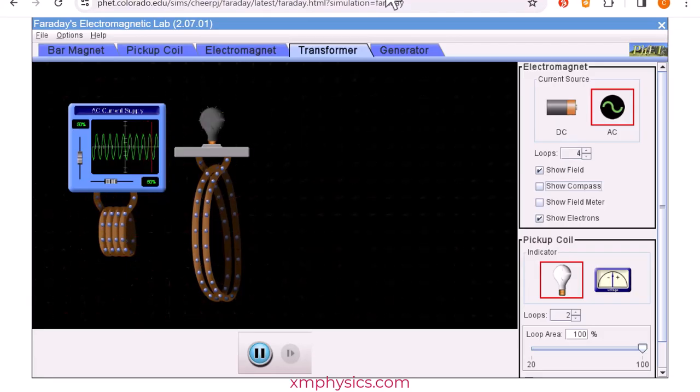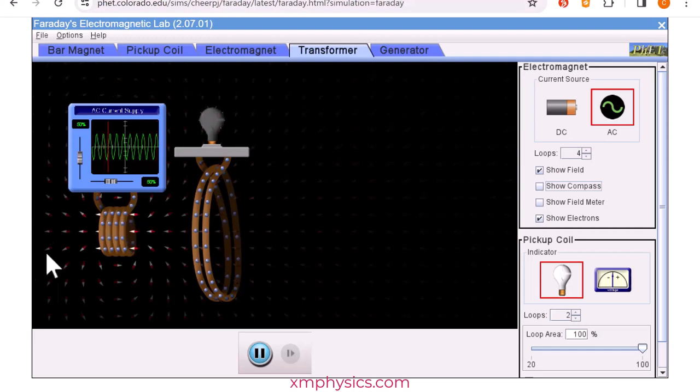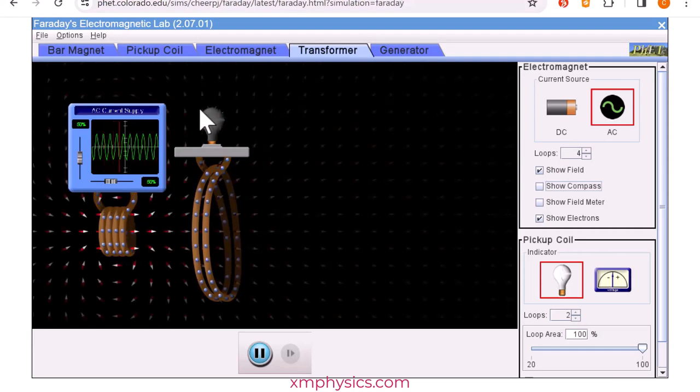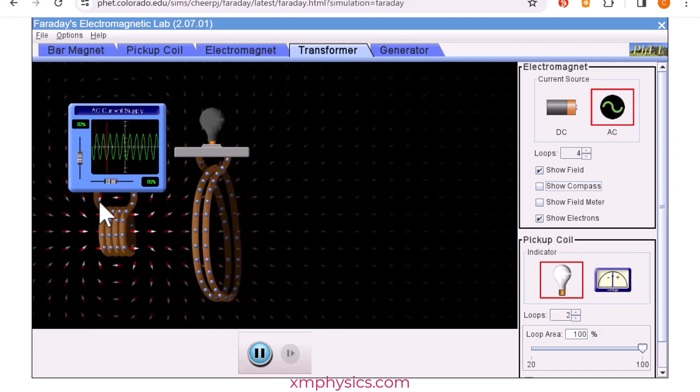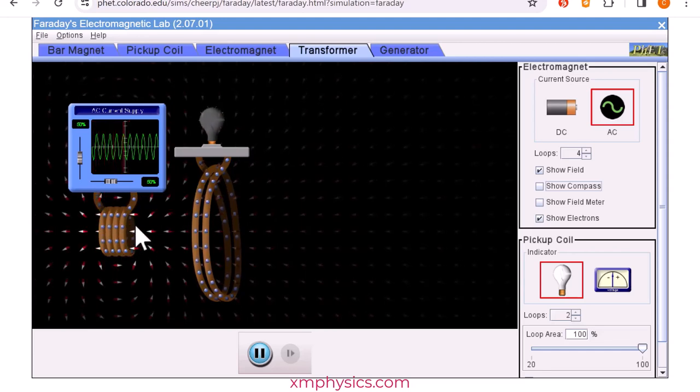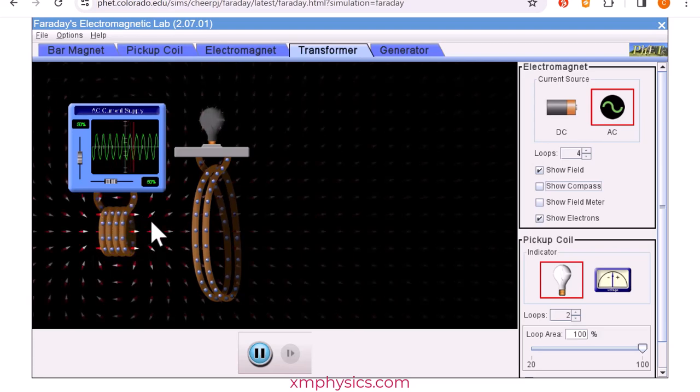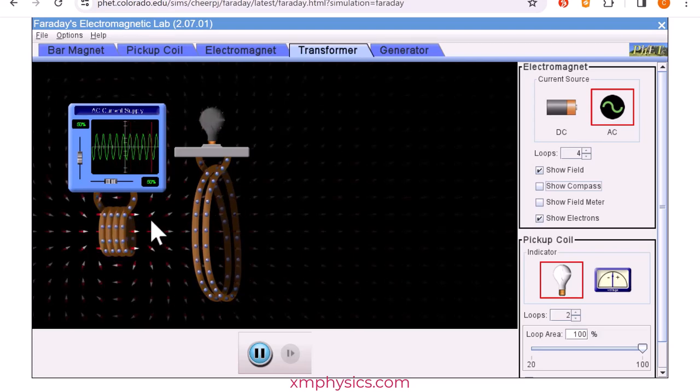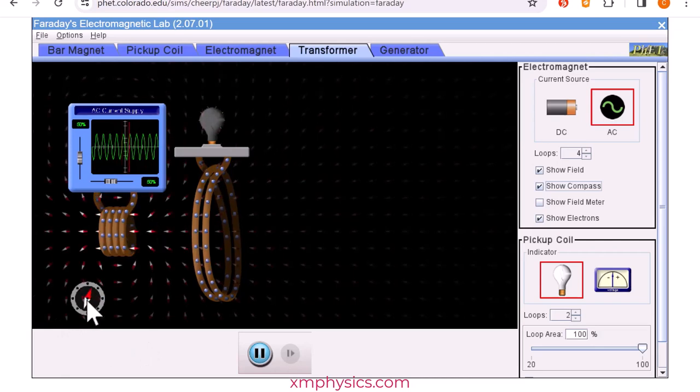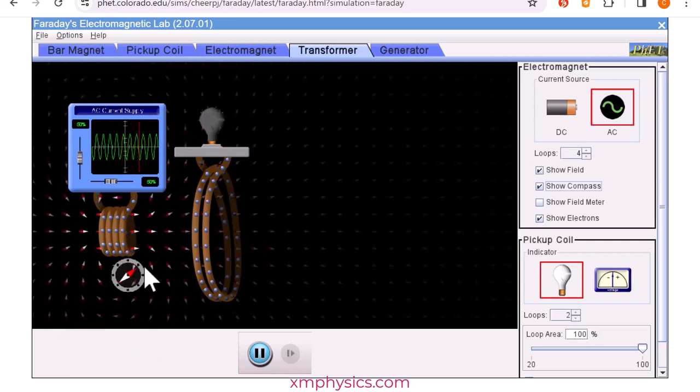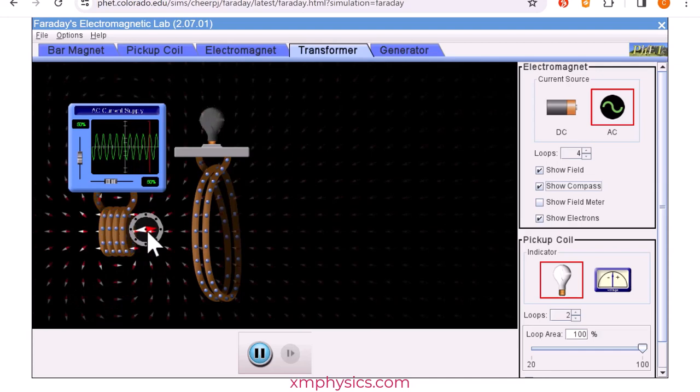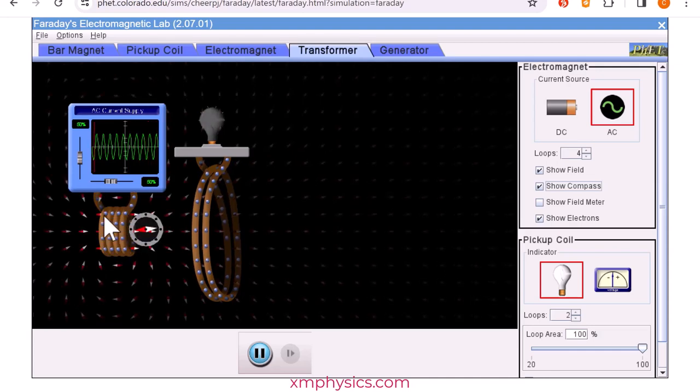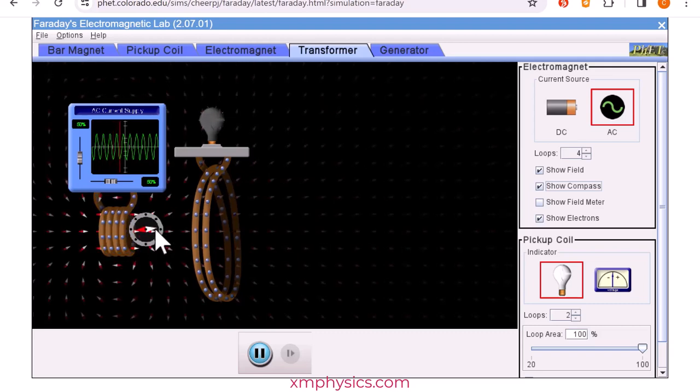Now before I explain the operation of the transformer, let me use this applet to remind you of electromagnetic induction. So we have here a coil that has an AC current running through it, producing this magnetic flux that's illustrated by the magnetic needles here. I can bring up a compass and you can see the compass needle switching around. The magnetic field produced by this coil which has an AC current running through it is an alternating magnetic flux.